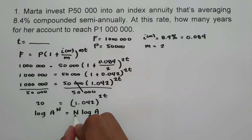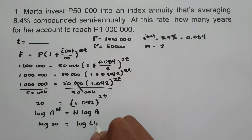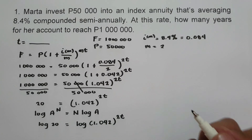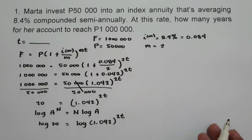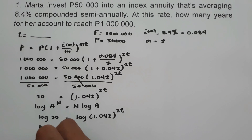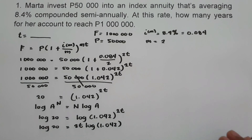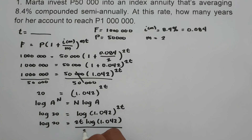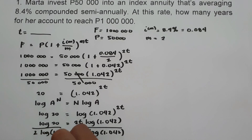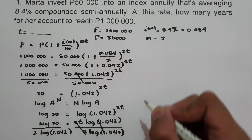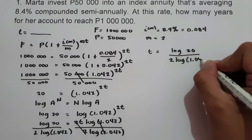Applying the logarithm to both sides: log 20 equals log 1.042 raised to 2T. Moving 2T in front of the logarithm, we get: log 20 equals 2T times log 1.042. Then, dividing both sides by 2 log 1.042, we isolate T: T equals log 20 over 2 log 1.042.